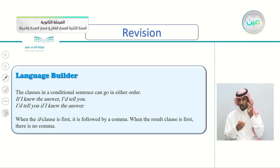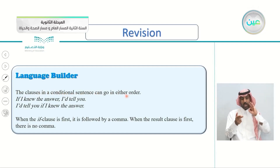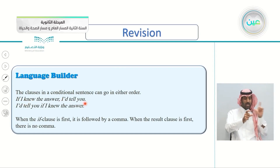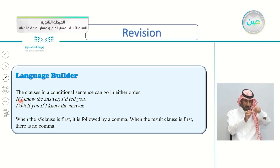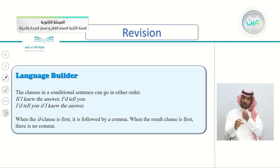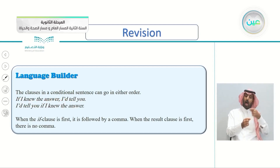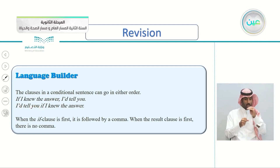And remember, the two clauses — the if clause and the result clause — can go in either order. You can begin with either of them. But if you begin with the if clause, put a comma when you finish, then begin the result clause. When you begin with the result clause, don't use any commas. For example: 'If I knew the answer, I would tell you' versus 'I would tell you if I knew the answer.' So this is the only difference.